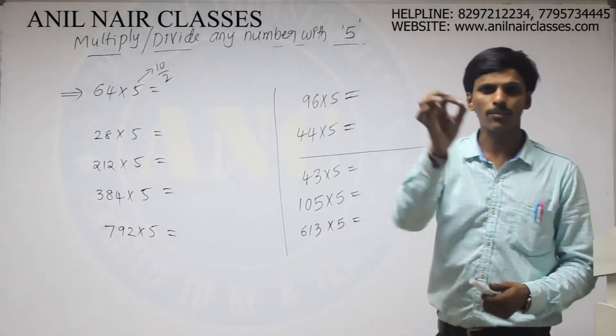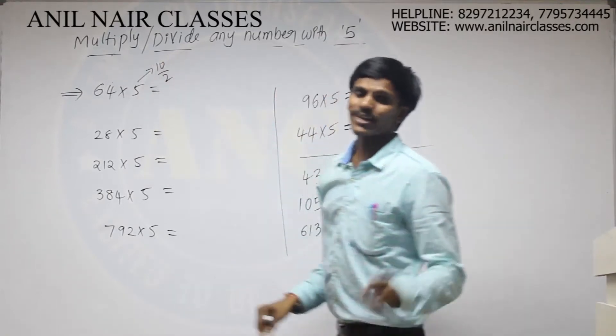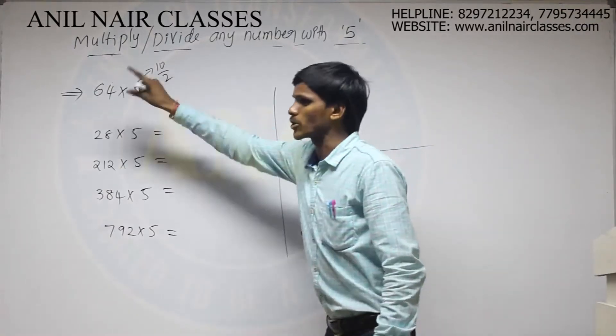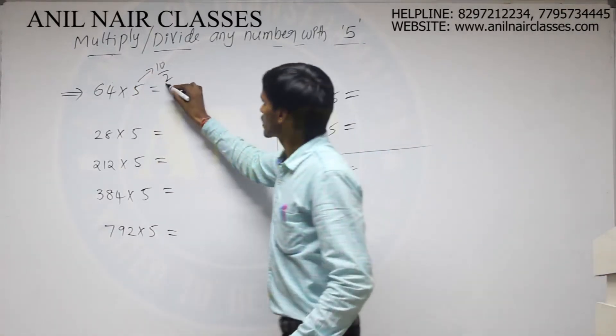5 can be written as 10 by 2. Here, multiplying any given number with 10 is very easy. No need to do any extra calculation, just to put the 0 at the end of that number. And now I have to divide with 2.